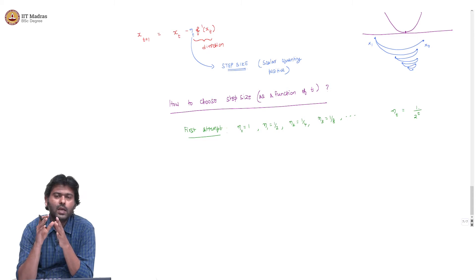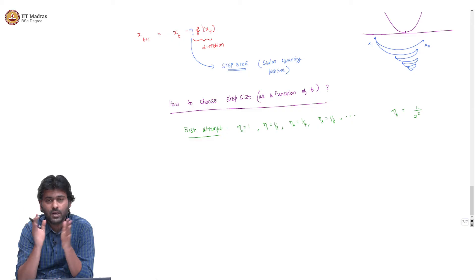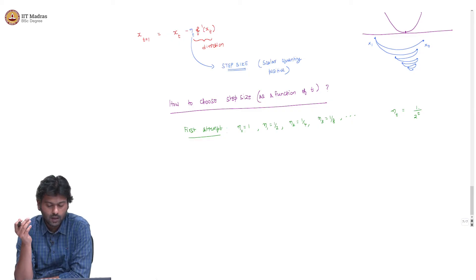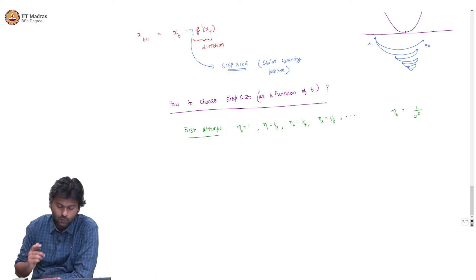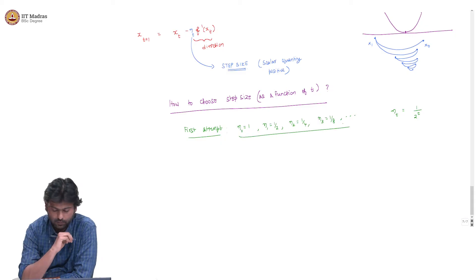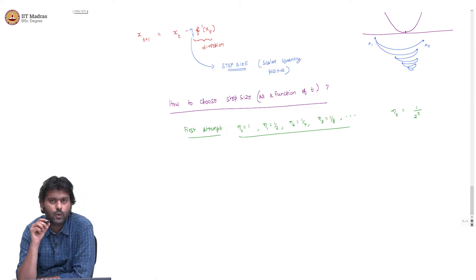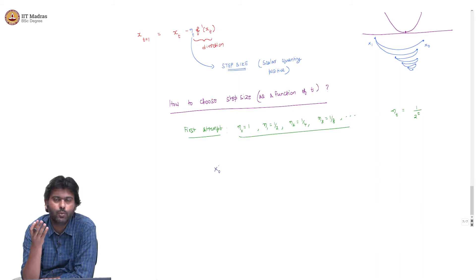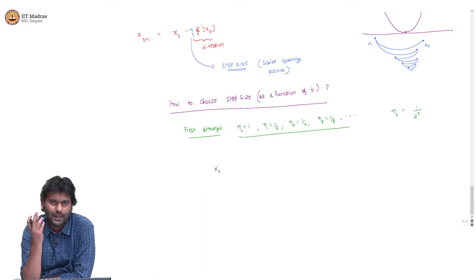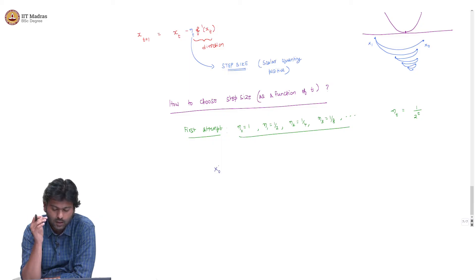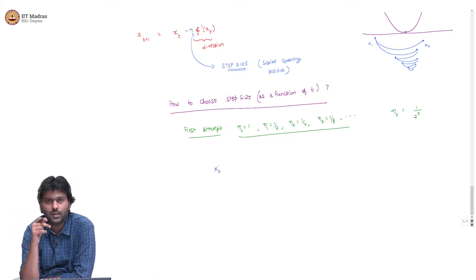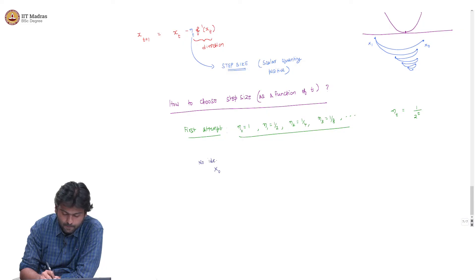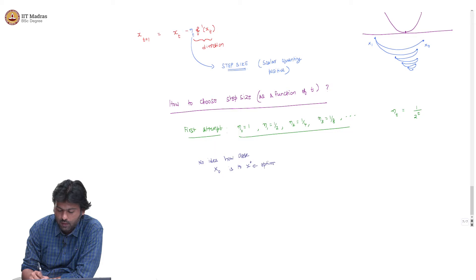The question to ask is: is this the best possible step size, or are there potential issues? One thing to keep in mind is that your starting point x_0 gives you no clue how close you are to the actual minimum x*. The computer starts with an arbitrary x_0 and it is not clear how close x_0 is to x*, where x* is the minimum.